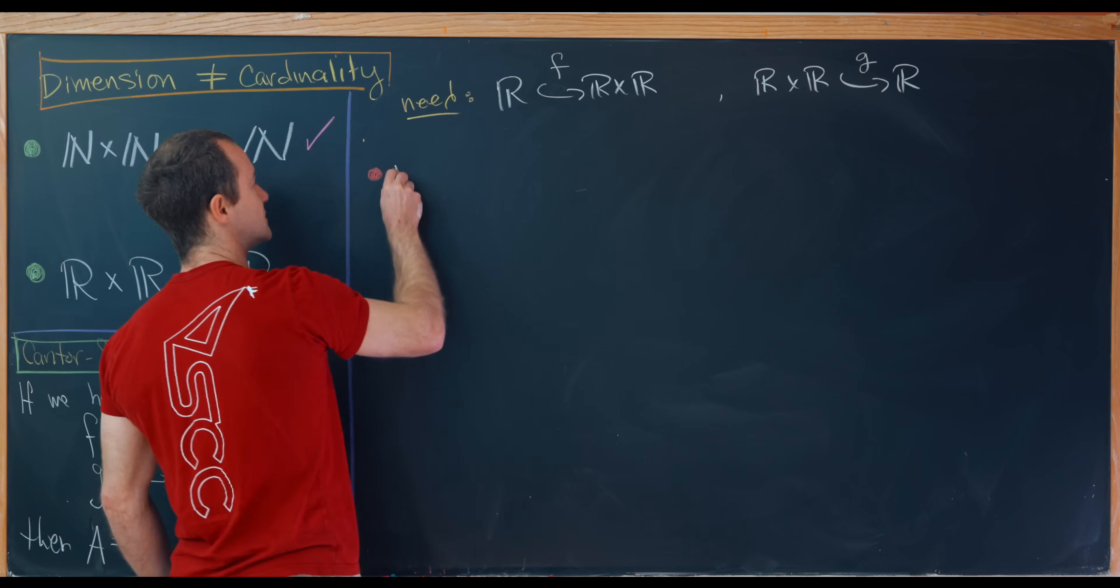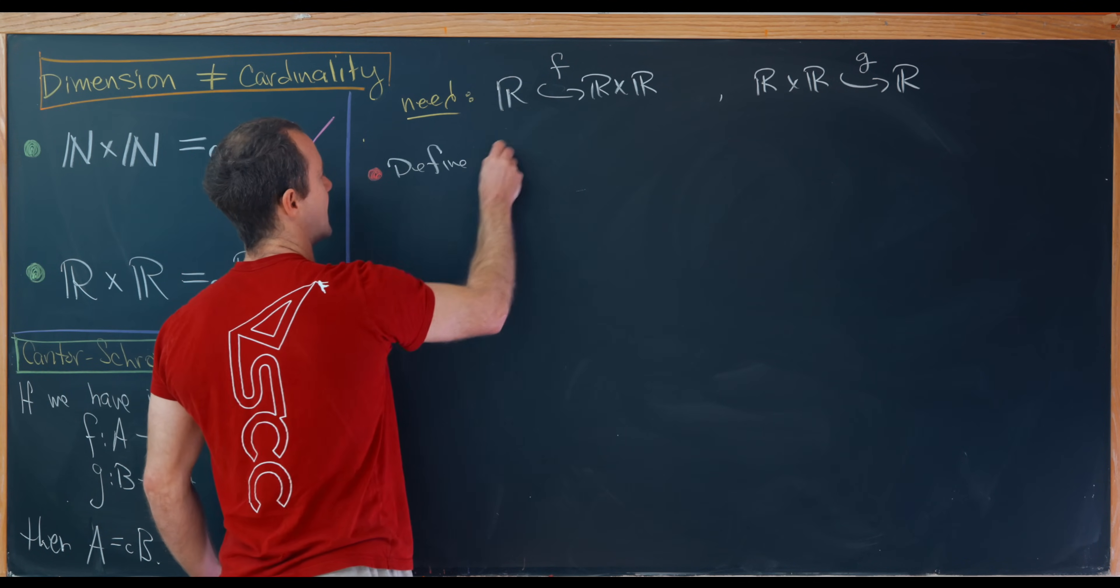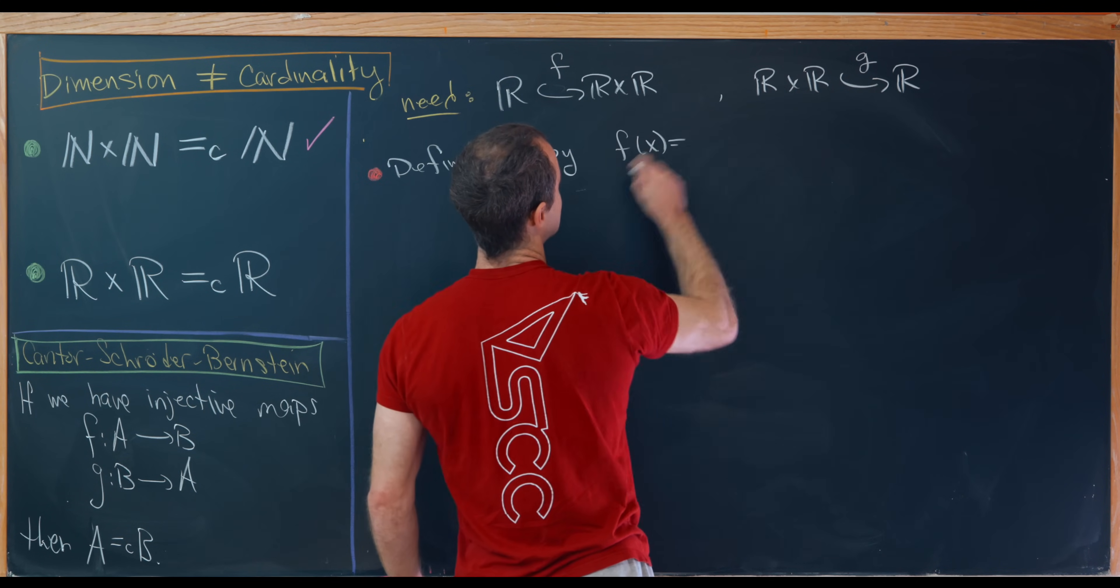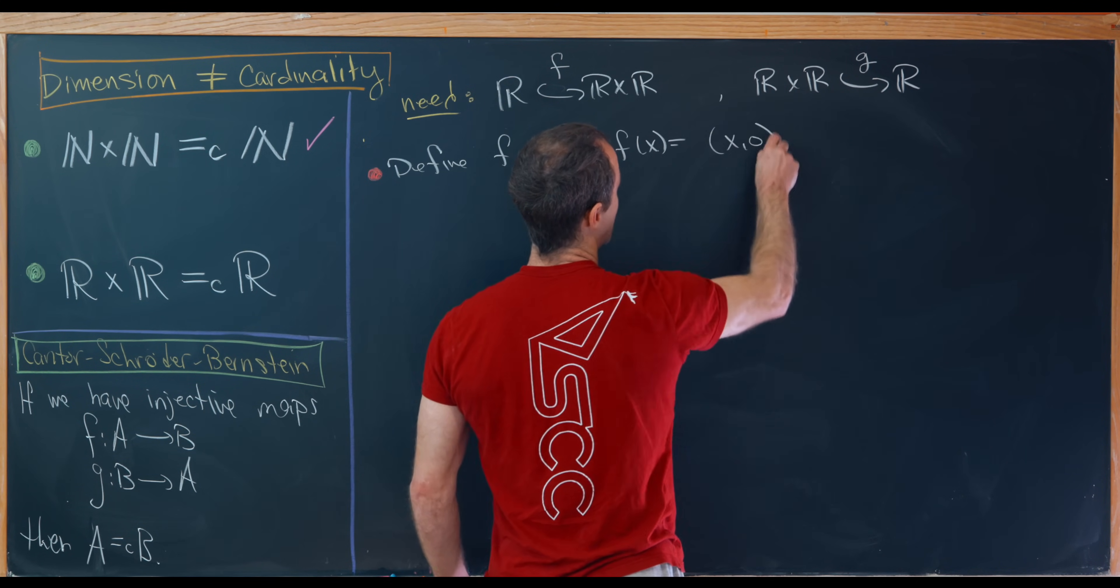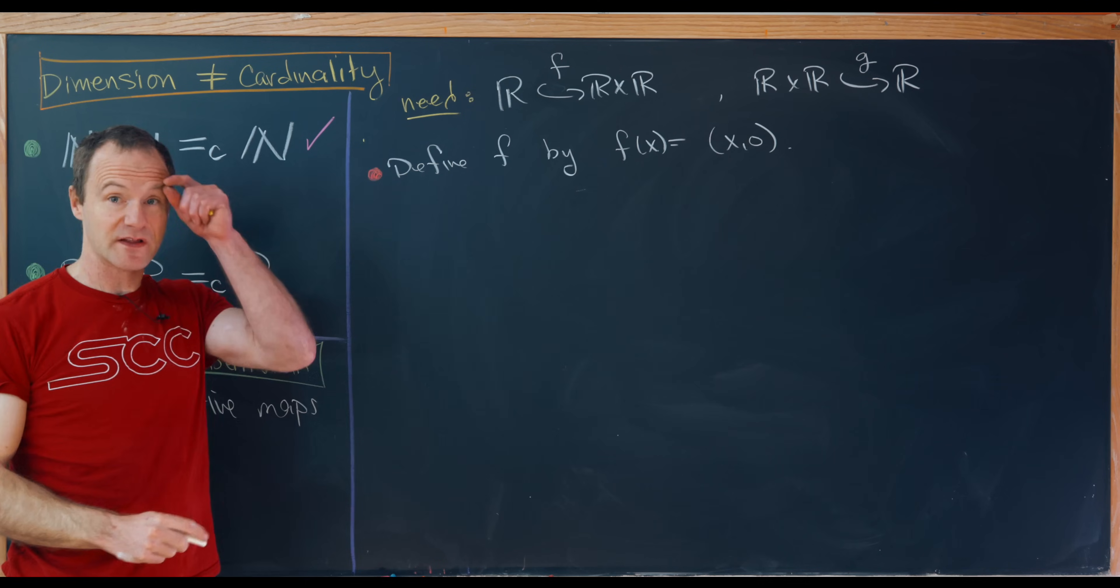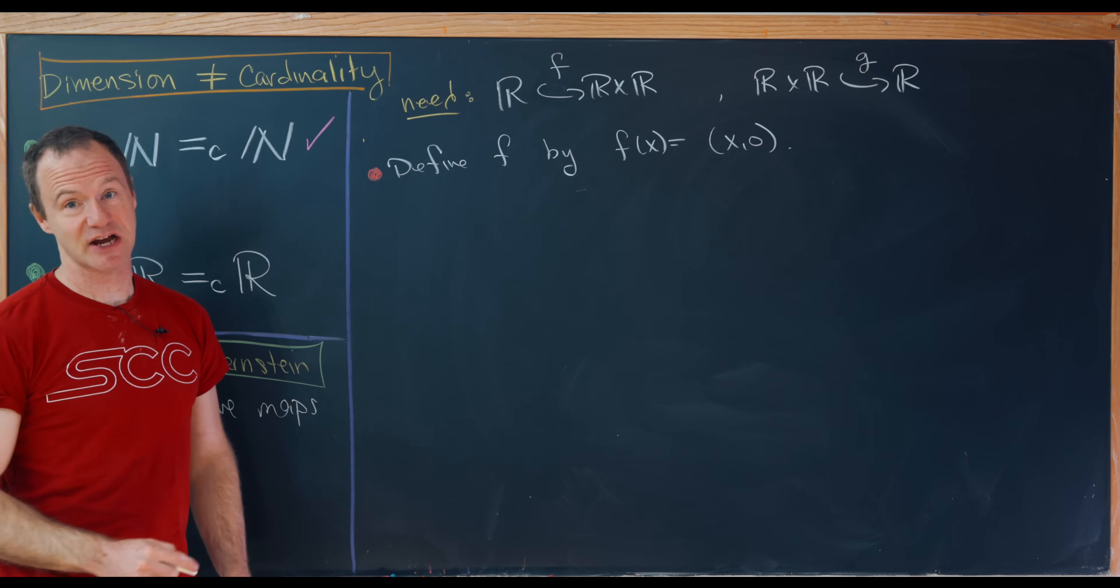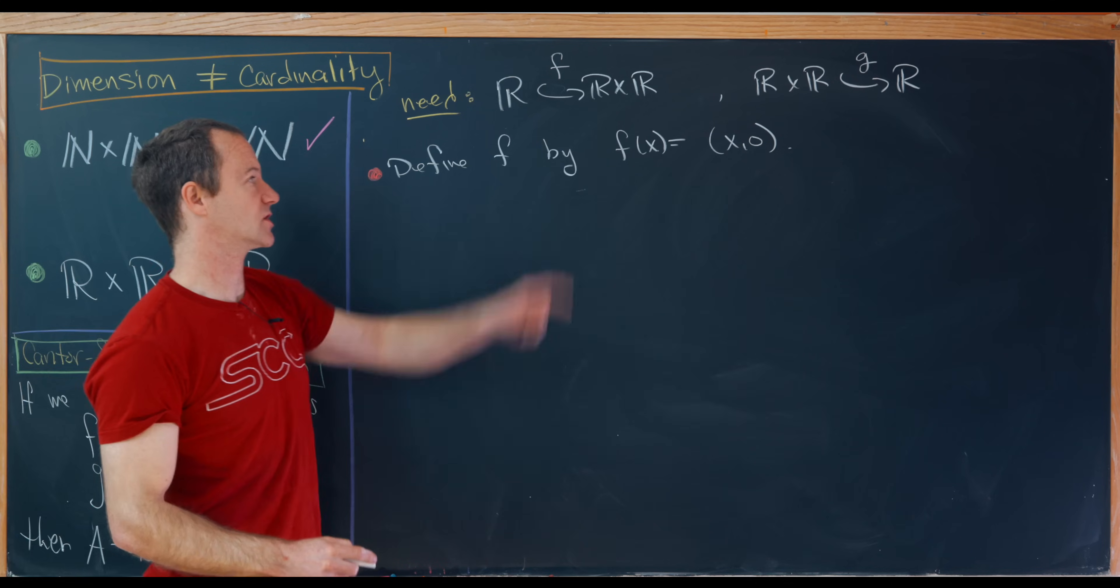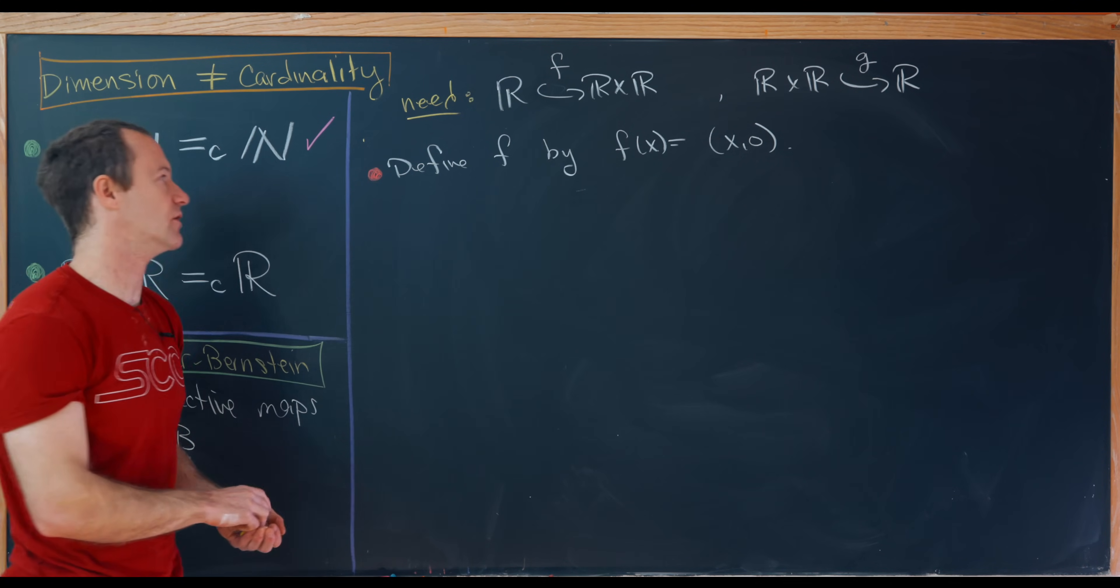And now let's work up each of these individually, starting with this function F, and this one is very easy to define. So let's define F by F evaluated at x equals the ordered pair (x, 0). And that's really all there is to it. That's clearly an injective function, so we have an injection from R to R cross R and we're good to go there.